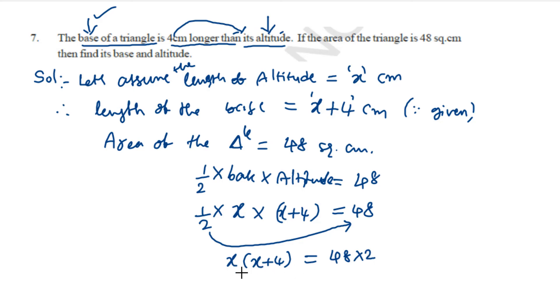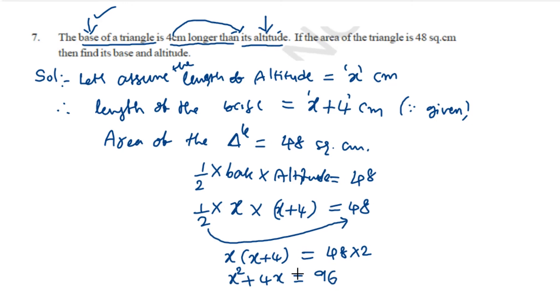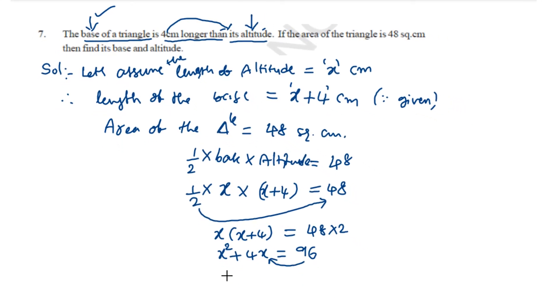Now, by multiplying on the left hand side, we get x into x is x square plus x into 4 is 4x which equals to 48 times 2 is 96. Now, if we transpose this 96 to this side, we get x square plus 4x minus 96 equals to 0.